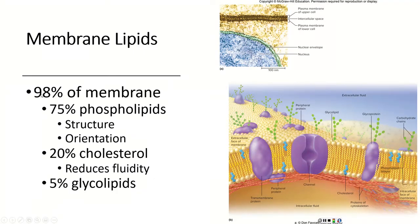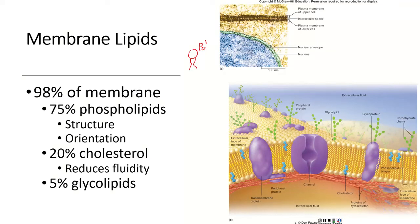We talked about phospholipids back in Chapter 2 — those are the ones that look like a tadpole with two tails. We can see there's the head and the two tails. So 98% of the membrane are lipids, and of that 98%, 75% are phospholipids. When we look at the phospholipids, remember from Chapter 2: the head was polar, and the fatty acid tails are non-polar. So the whole molecule is polar because it has different regions with different properties.